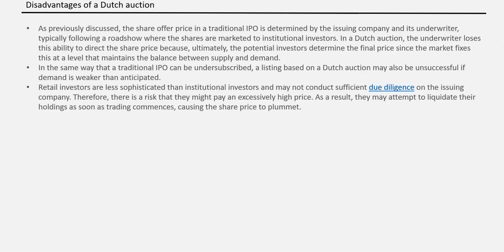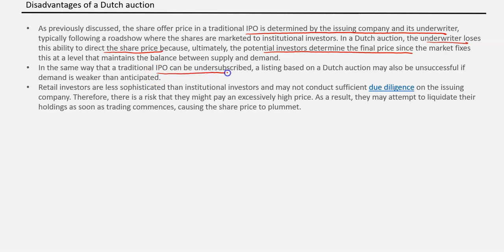Disadvantages of the Dutch auction method: In a traditional IPO, the share price is determined by the issuing company and its underwriter. In a Dutch auction, the underwriter loses the ability to direct the share price because potential investors determine the final price. The Dutch auction is more driven by supply and demand rather than company control. Additionally, just as a traditional IPO can be undersubscribed, a Dutch auction listing may also be unsuccessful if demand is weaker.